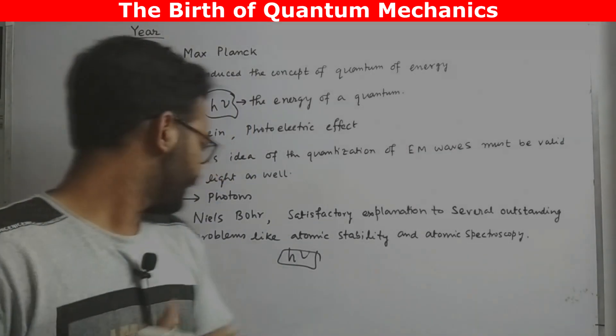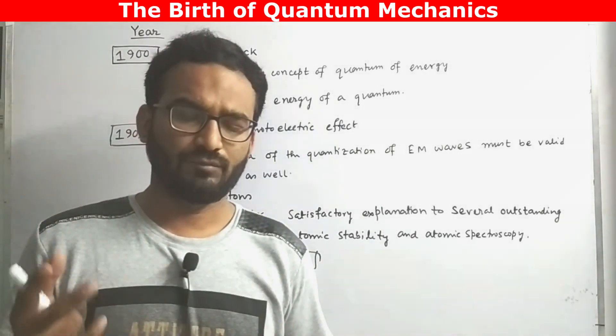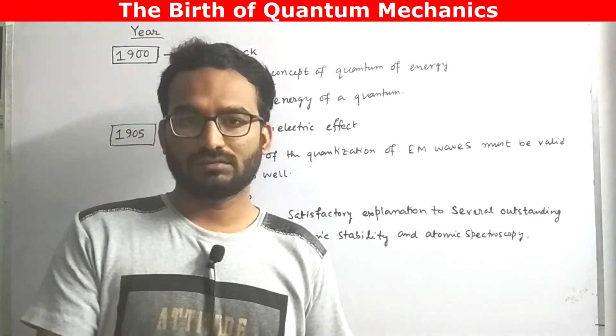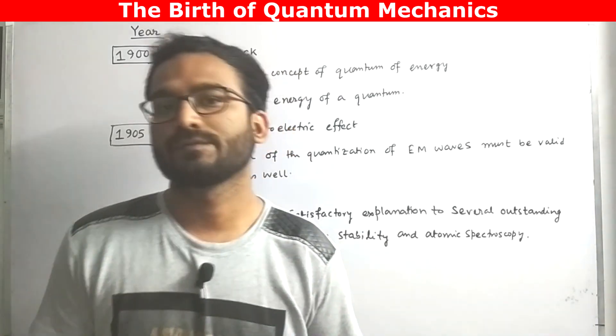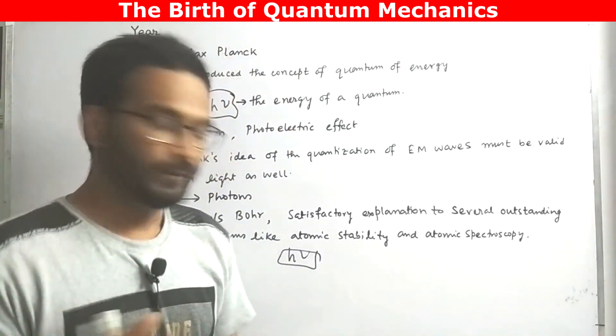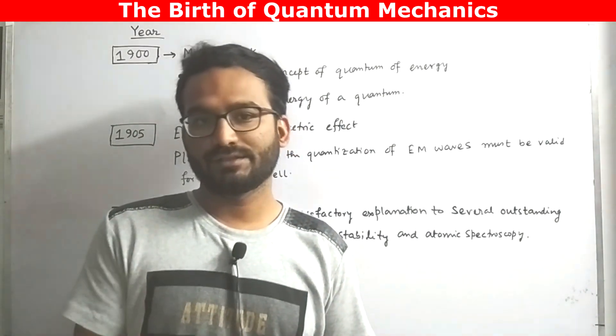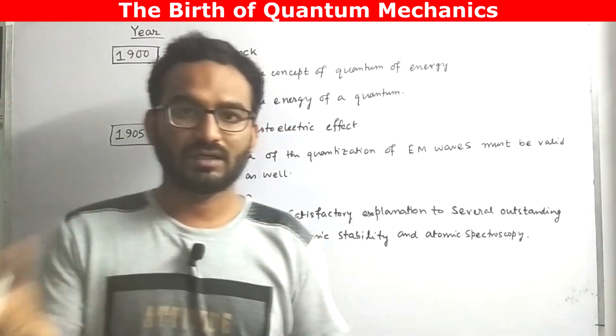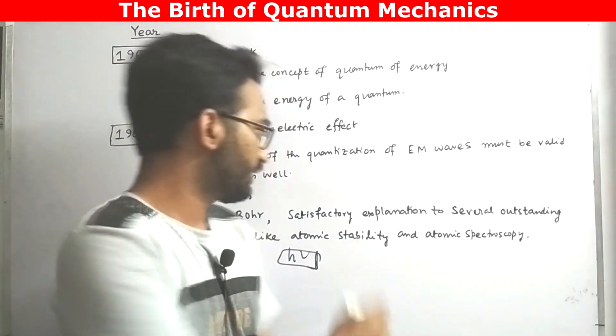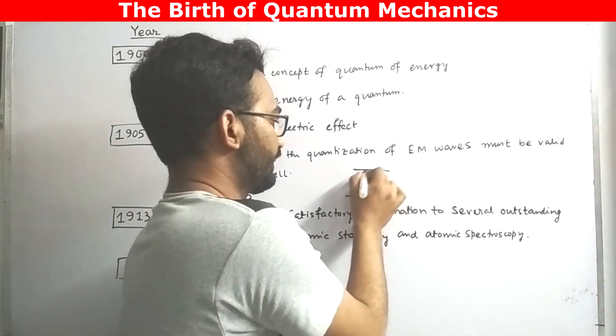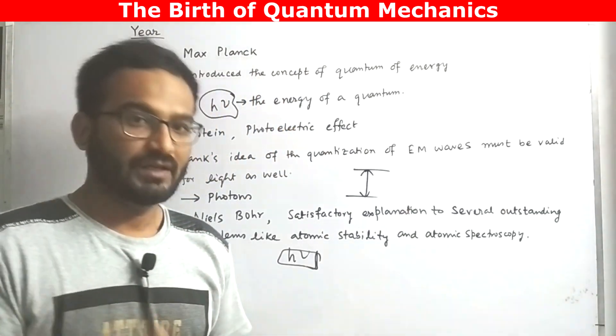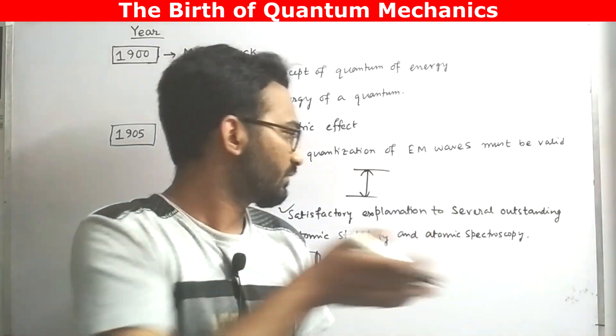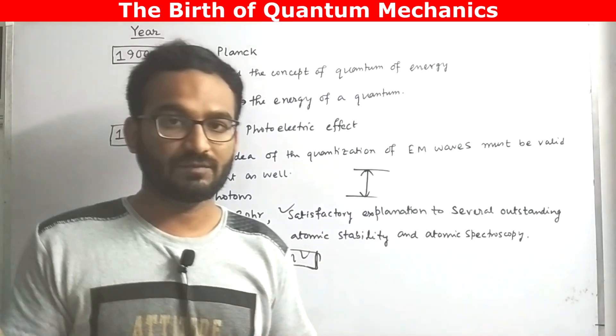Another breakthrough came in the year 1913 and it was due to Niels Bohr. According to Niels Bohr, atom can exist only in discrete units of energy and whenever it absorbs radiation or some kind of external influence, it emits or radiates energy in discrete unit of h nu. And because the emission or absorption occurs in discrete energy levels, the amount of energy released or accepted will be discrete in nature. This work of Niels Bohr gave satisfactory explanation to several outstanding problems of that time like atomic stability and atomic spectroscopy.